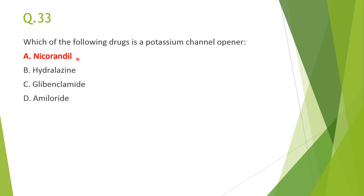Next: which drug is a potassium channel opener — answer A, nicorandil. Hydralazine is an arterial dilator; glibenclamide is a potassium channel blocker used as an oral hypoglycemic; amiloride is a diuretic that inhibits the renal epithelial sodium channel. Nicorandil is the potassium channel opener.